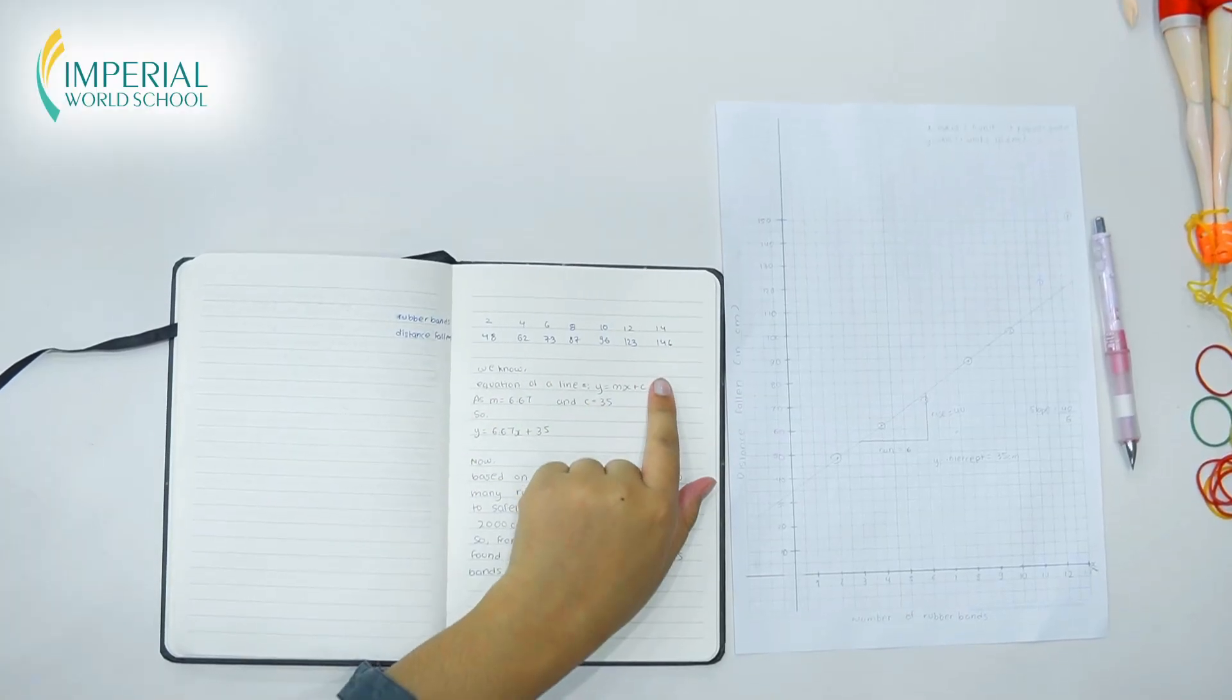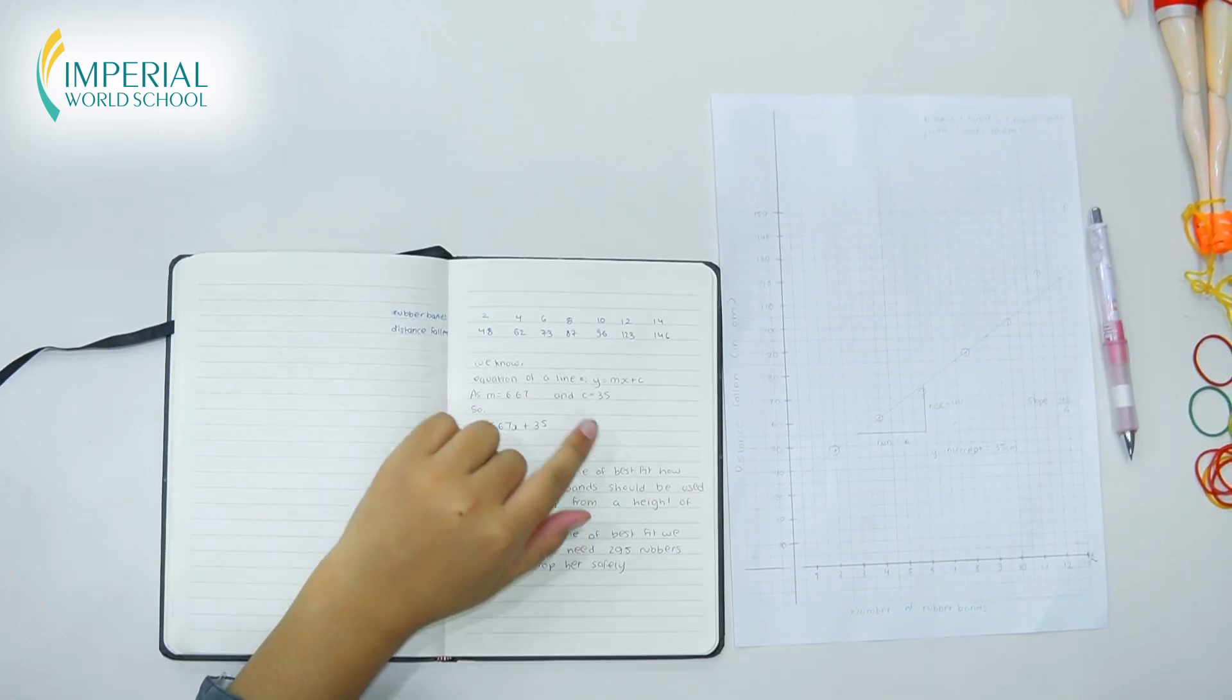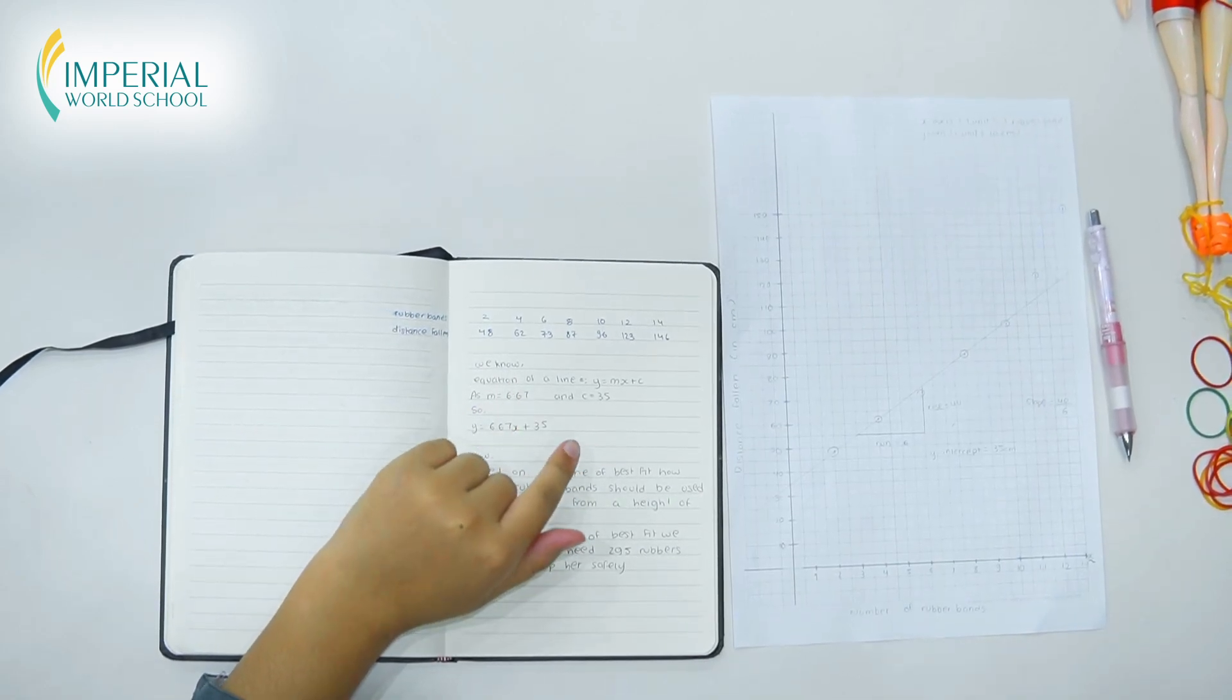As you can see here, I've written down the measurements where the top numbers represent the rubber bands and the bottom numbers represent the distance fallen in centimeters.